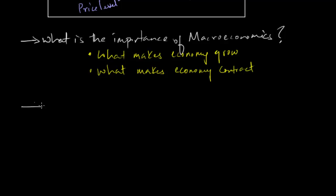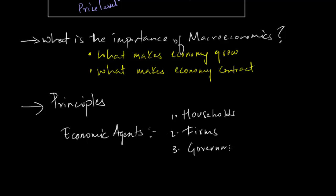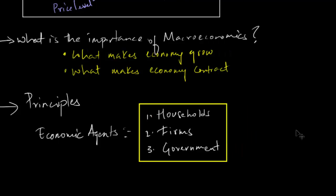Now coming to the principles of macroeconomics: macroeconomics study focuses on three broad areas, also known as the three economic agents in the economy. They are households, firms, and government. The interrelationship between these three agents is what macroeconomics deals with.